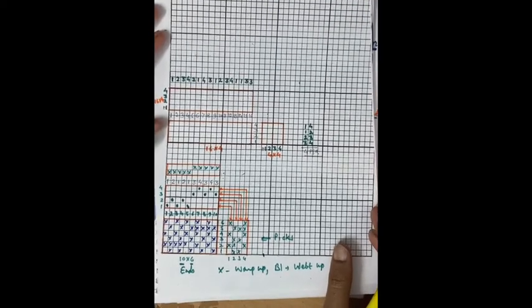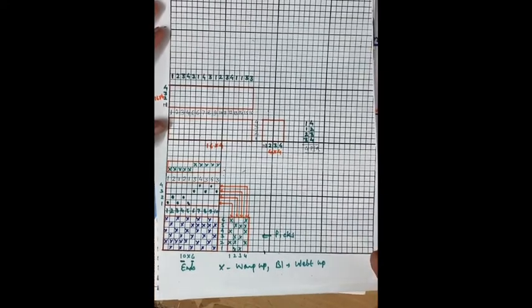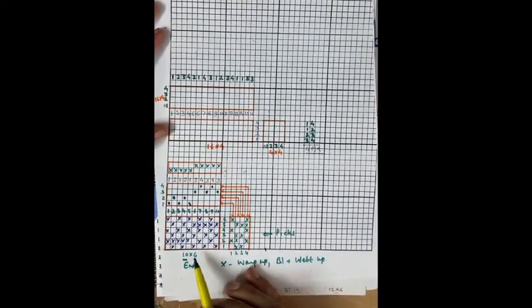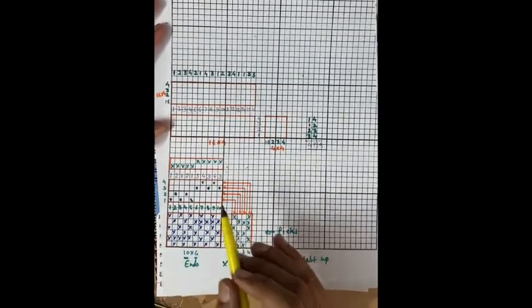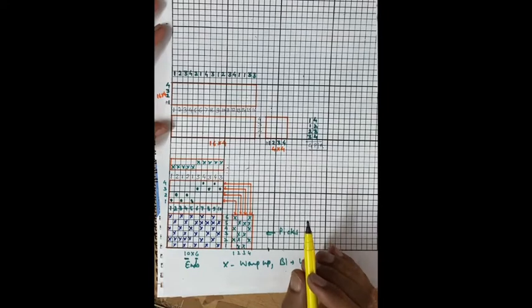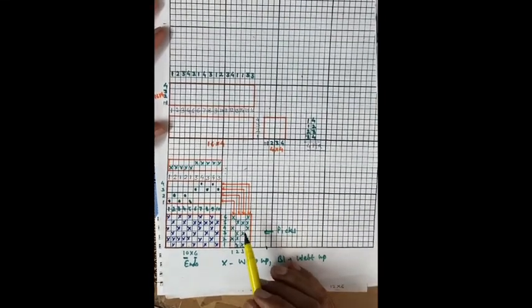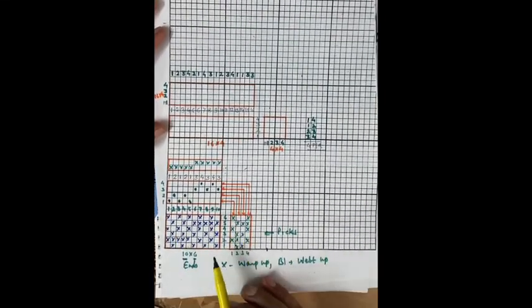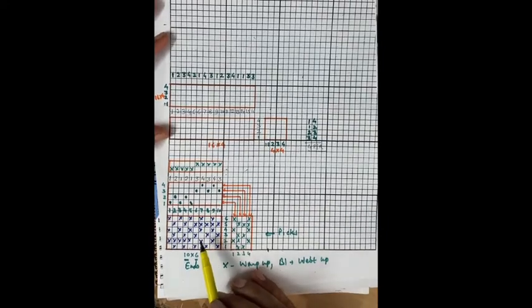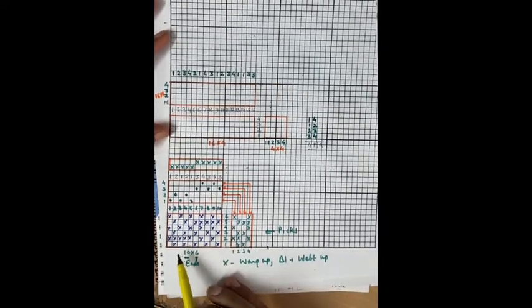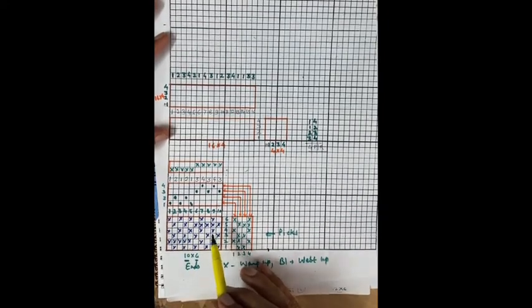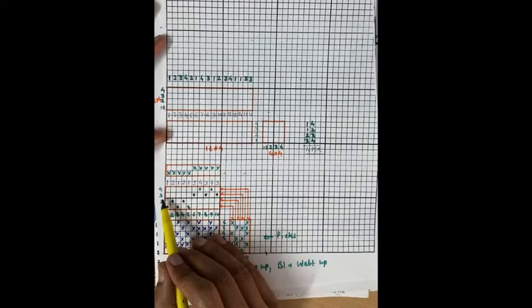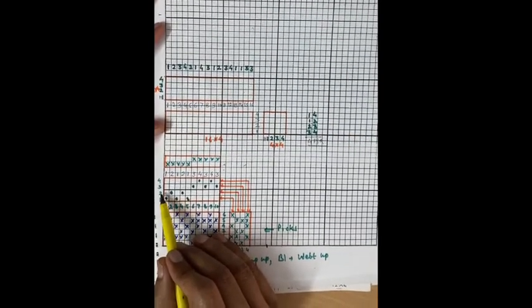Hello students. In the previous video we have taken four elements of fabric structure: design, draft, lifting plan, and denting plan. We represented them by the graph paper method, in which ends and picks are represented by vertical and horizontal lines in design, and ends and heald frames are represented by vertical and horizontal lines respectively.